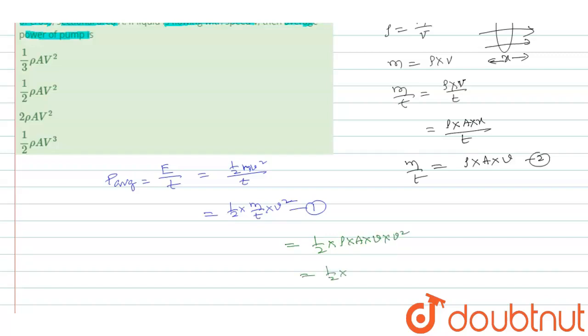So this is equal to half ρ into A into V³. This is what P average.